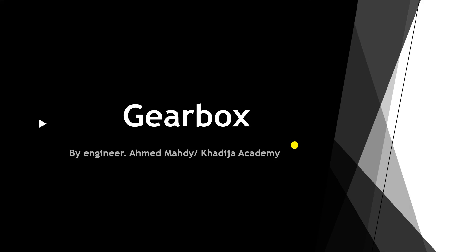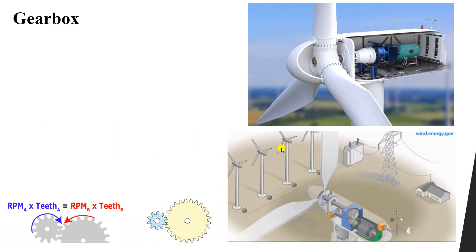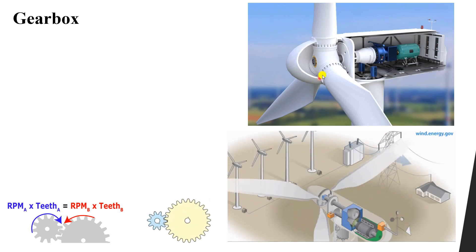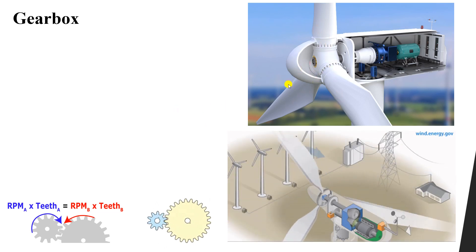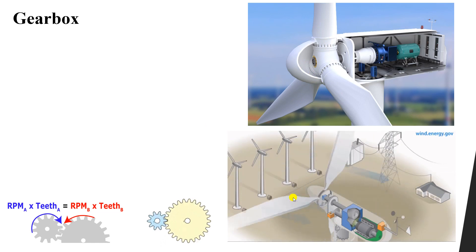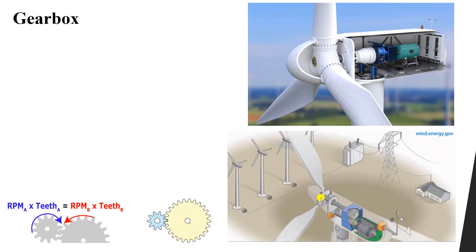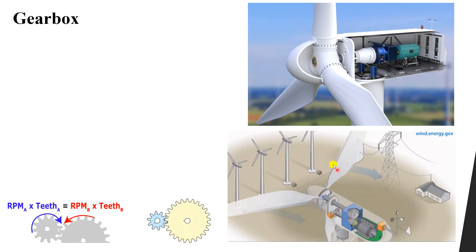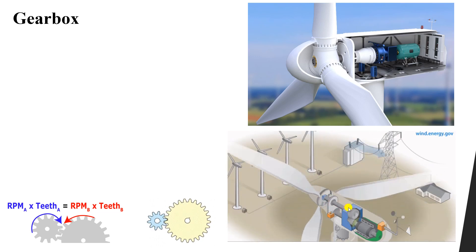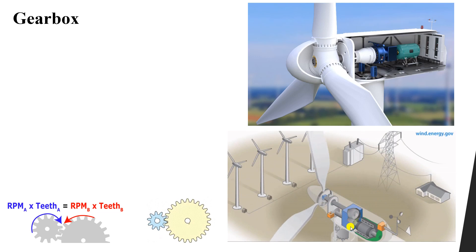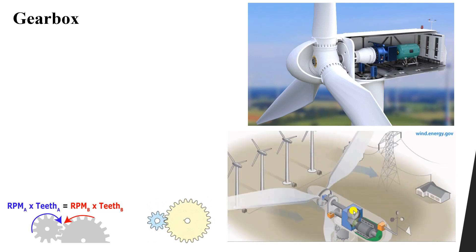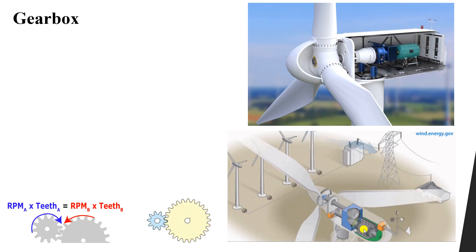Welcome to another lesson in our course for wind turbines. In this lesson we would like to discuss the second component, which is the gearbox. As we remember, the wind turbine blades convert the kinetic energy of the wind into mechanical energy. As the rotor blades start rotating, they have a shaft which is connected to a gearbox that increases the speed suitable for our electrical generator.